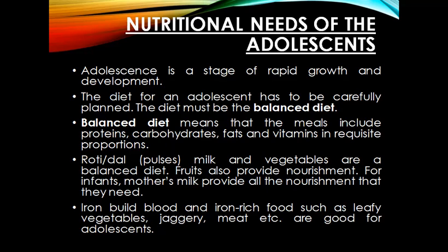For example, roti, dal and pulses, milk, vegetables, and fruits are considered part of a balanced diet. Fruits provide nourishment to the body, and milk itself is considered a balanced diet — for example, in infants, mother's milk provides all the nourishment they need. Iron-rich foods such as leafy vegetables, jaggery, and meat are also good for adolescents for proper growth and development.